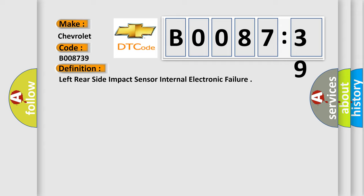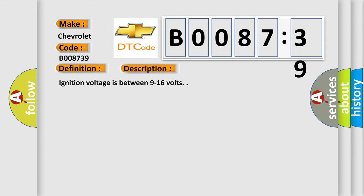And now this is a short description of this DTC code. Ignition voltage is between 9 to 16 volts. This diagnostic error occurs most often in these cases.